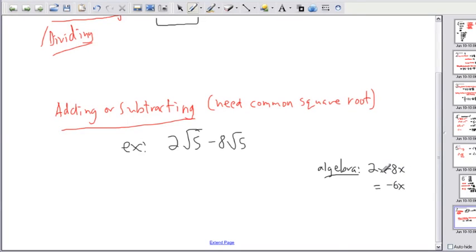The 2x minus 8x would be minus 6x. In other words, I'd be combining like terms. I'd be combining terms with x's in them. That would be minus 6x.